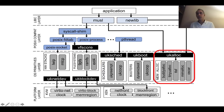You can have different memory allocators in Unicraft. So far we support about five of them, because different applications perform differently when using different memory allocators.